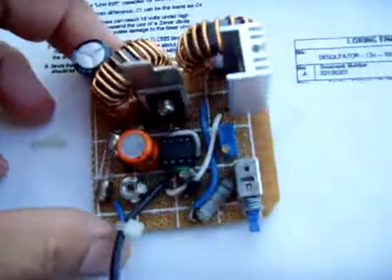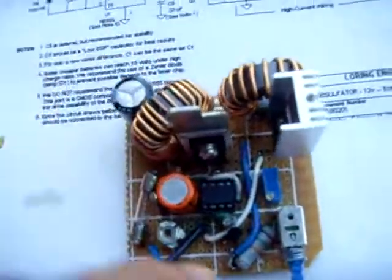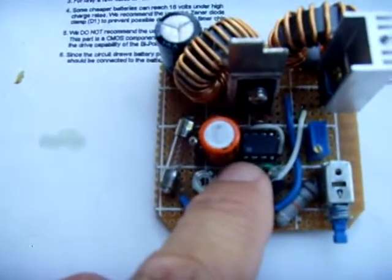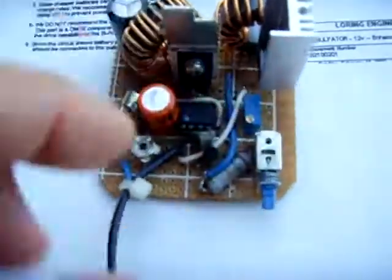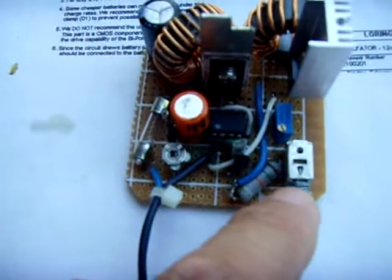I got a little socket here for the 555 IC. This switch right here disconnects pin 3, so you could put an oscilloscope on pin 3.